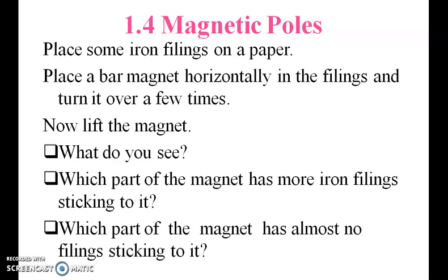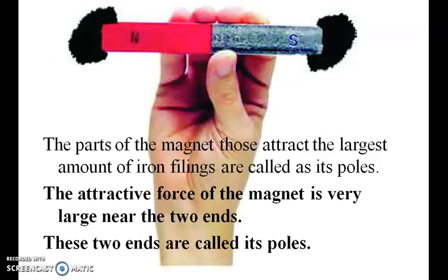Which part of the magnet has almost no iron filings sticking to it? You will notice that the ends attract the most iron filings. One side is North and the other side is South.